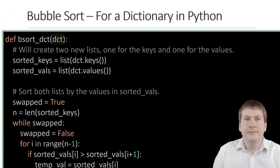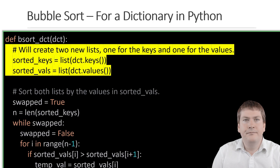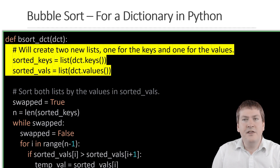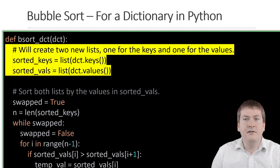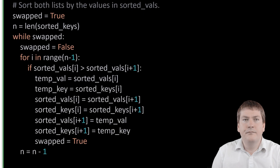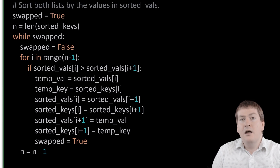Our sorting function takes a dictionary as an argument and returns a copy of that dictionary sorted by values in ascending order. The first thing we do is create two lists. The sorted keys list is a list of the keys in the dictionary — we can use the dictionary keys method to make a copy of the list of keys. The sorted values list is a list of values from the dictionary — we use the values method to make a copy of the dictionary's values. It's important to note that both of these lists will be in the same order as they are in the dictionary. The remainder of the algorithm works the same as performing bubble sort on the list of values, except when we swap the values in the values list, we also have to swap the keys at the same location.